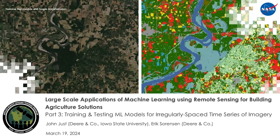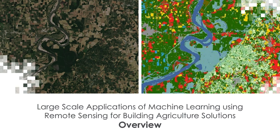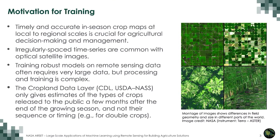Welcome back to the RSET training: Large-Scale Applications of Machine Learning Using Remote Sensing for Building Agriculture Solutions. My name is Sean McCartney and I'm an RSET trainer at NASA's Goddard Space Flight Center. Welcome to the third and final part of this webinar series. The motivations for hosting this training are that timely and accurate in-season crop maps at local to regional scales are crucial for agricultural decision-making and management.